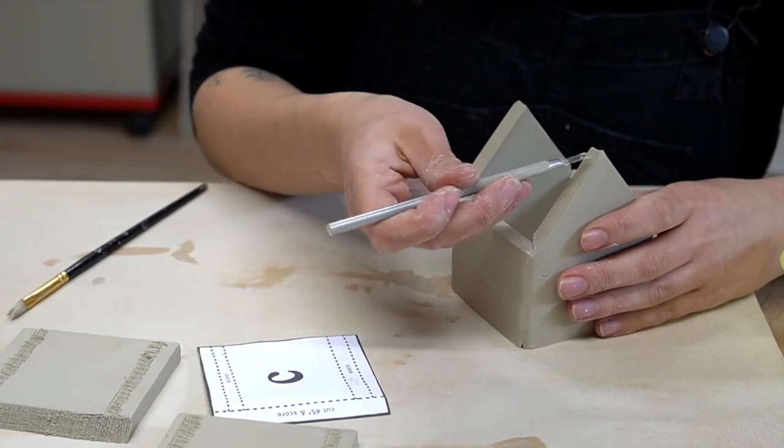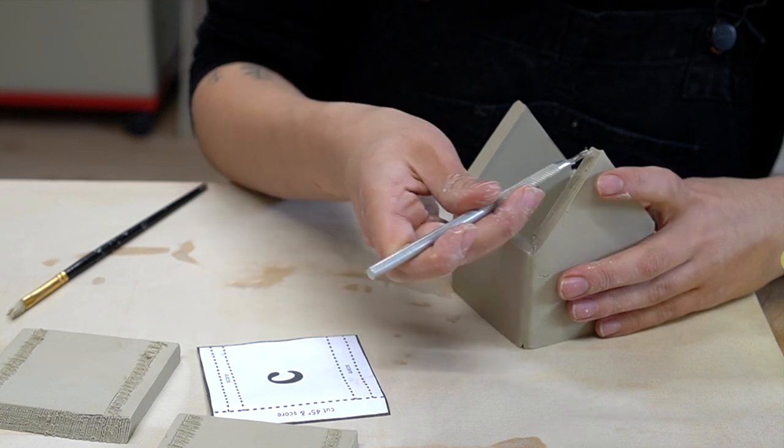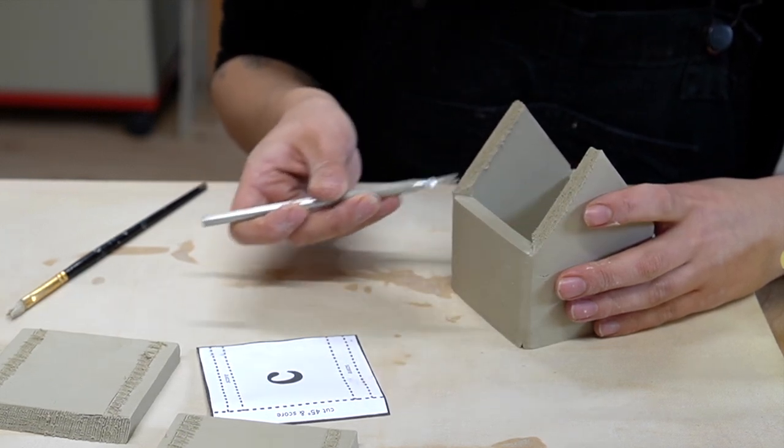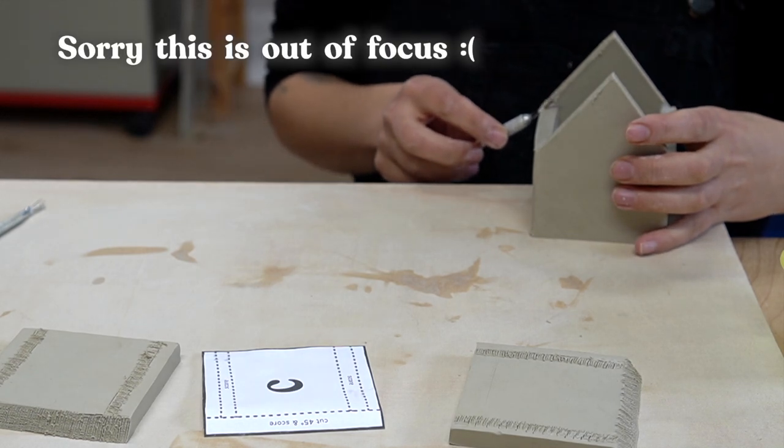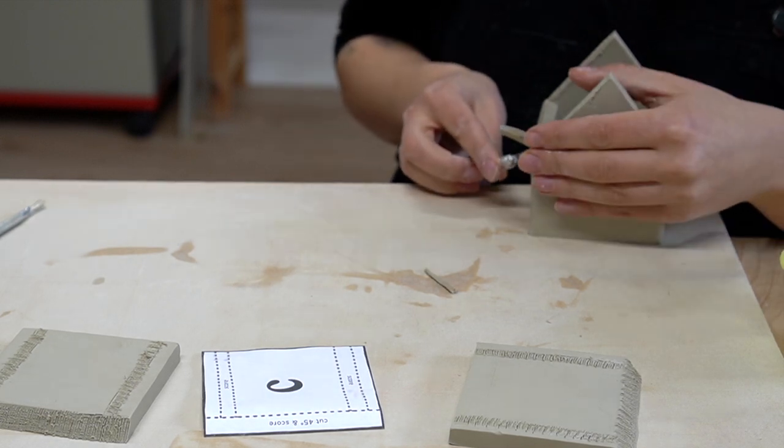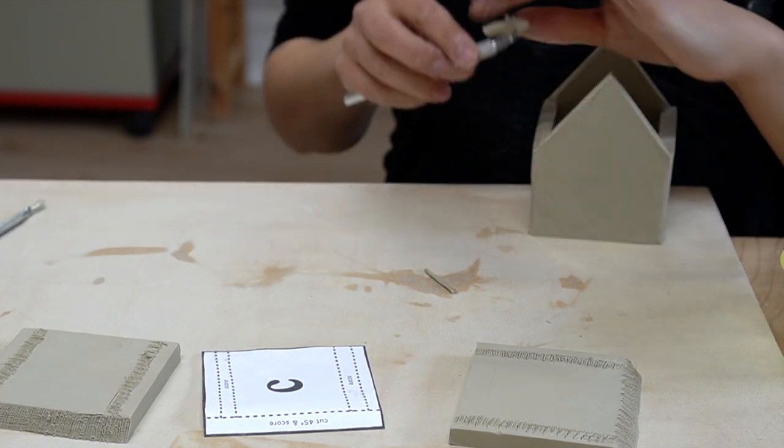Once the body is assembled you want to do some additional scoring on the edges of the walls where they will attach to the roof. To get the roof to sit flat you might also need to cut off the corner of the shorter wall as I'm doing here. This will depend on the thickness of your clay so I recommend checking first before you attach them.